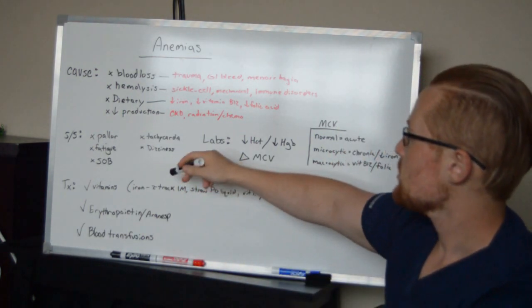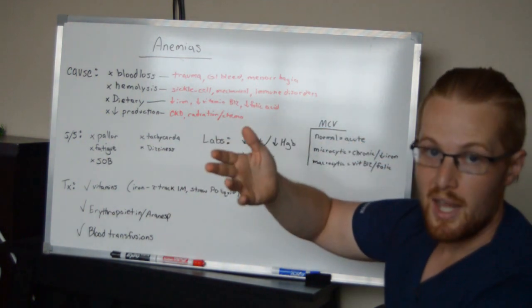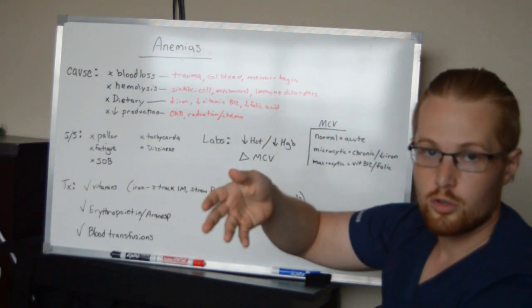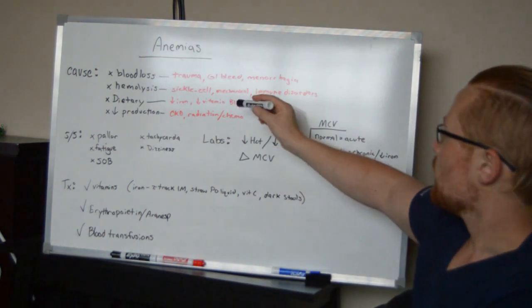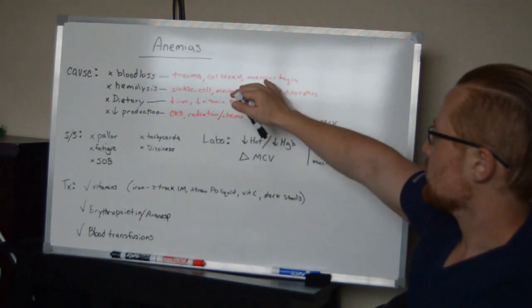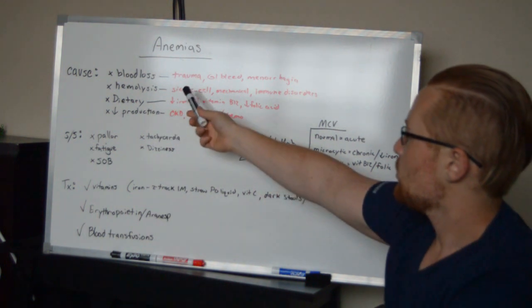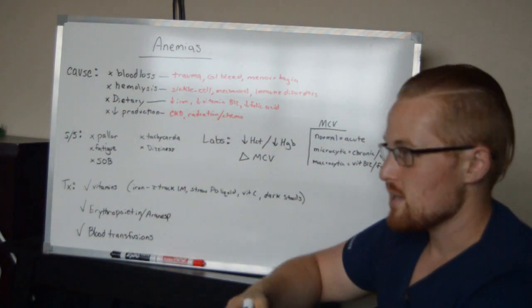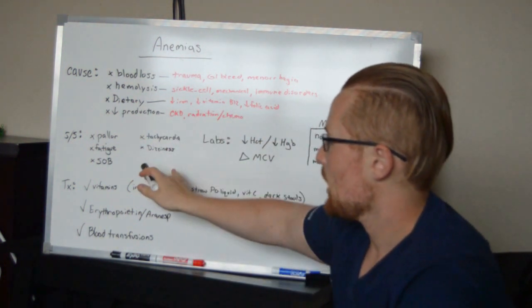Now, other signs and symptoms - of course, if you have a GI bleed, you may see dark stools or blood in the stools. With menorrhagia, your signs and symptoms could be increased heavy periods. So with these, there may be other signs and symptoms, but overall, they're going to at least have these.